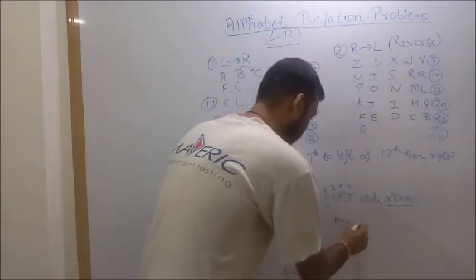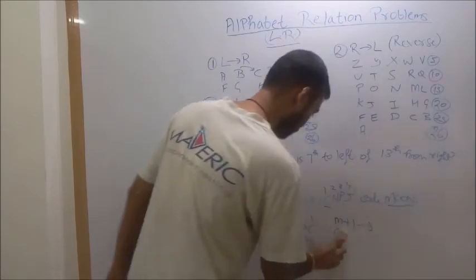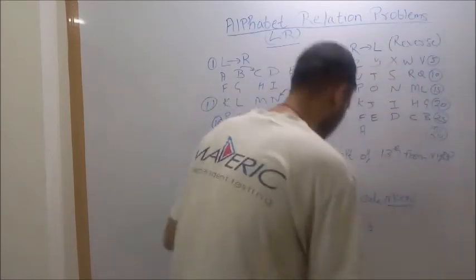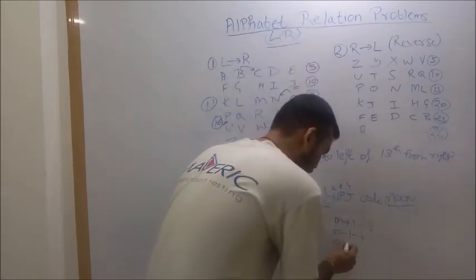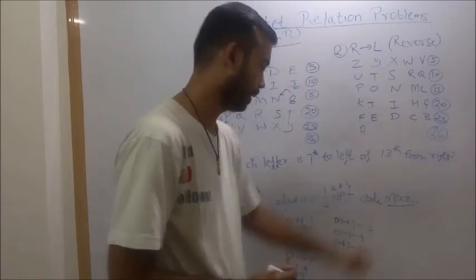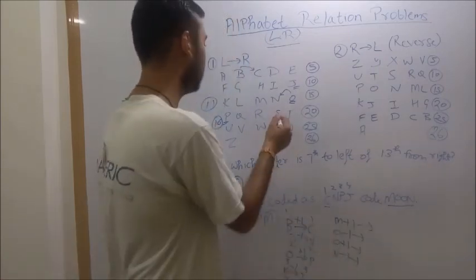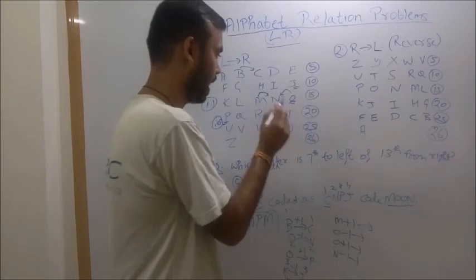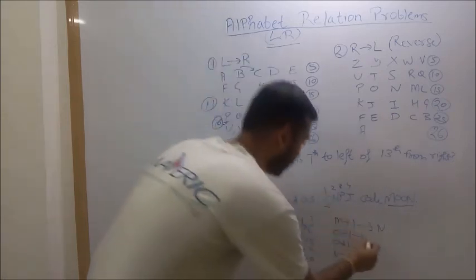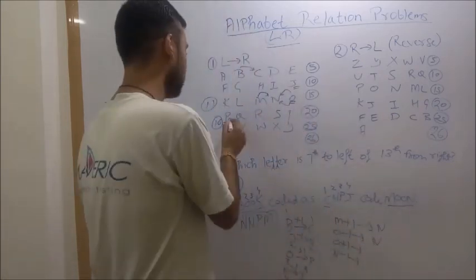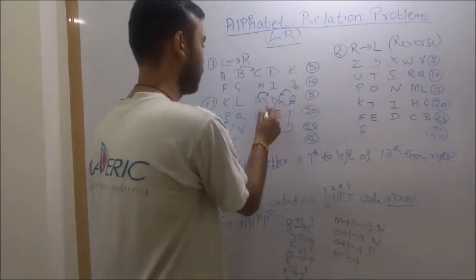M plus 1, O minus 1. Then, again O, this will be O plus 1. Now, N, N minus 1. M plus 1, see in this table, one step forward, N. O minus 1, one step backward, N. O plus 1, one step forward, P. N minus 1, one step backward, M.